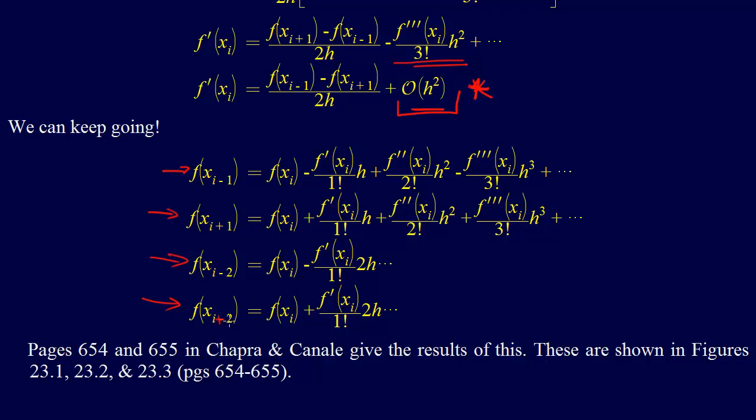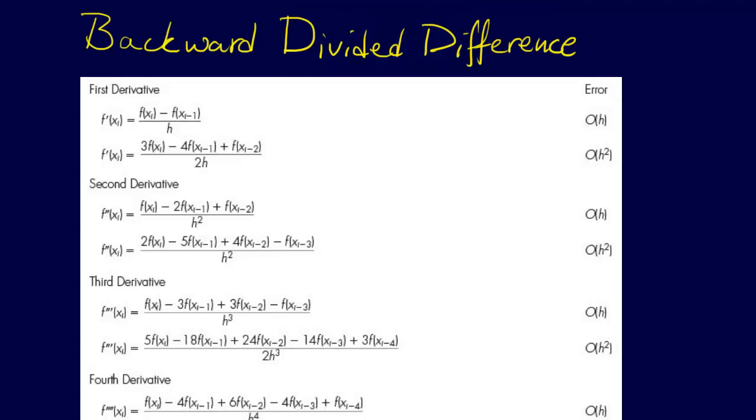Instead of doing that here for you, we'll just go ahead and refer you to pages 654 and 655 in Chapra and Canale. And there, figure 23.1 shows the forward divided difference, 23.2 shows the backward divided difference, and figure 23.3 shows the center difference. Here, I can go ahead and get these for you. Here they are.